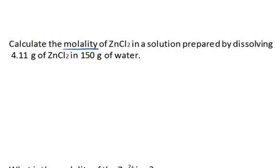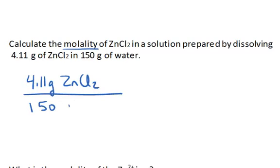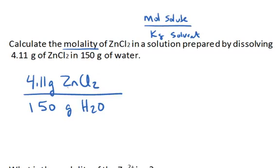So the units that are given right here are 4.11 grams of zinc chloride dissolved in 150 grams of water. That's our solvent. The molal units are moles of solute per kilogram of solvent. So we're in units of grams and grams. We need to convert the zinc chloride unit to moles and the water unit to kilograms.